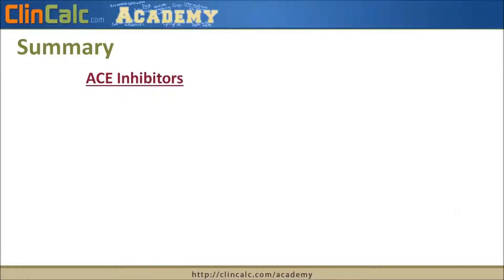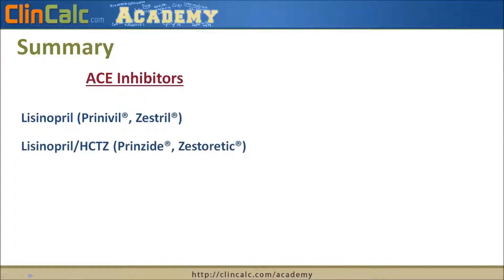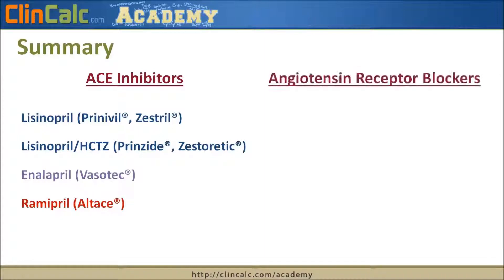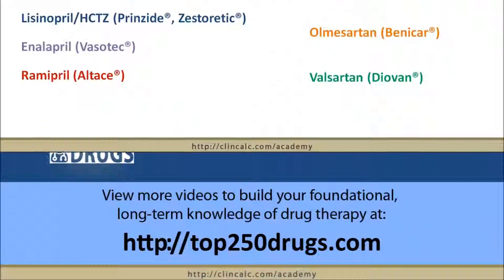To summarize: we discussed three ACE inhibitors — Lisinopril (Prinivil/Zestril), with a combination product with hydrochlorothiazide called Prinzide or Zestoretic; Enalapril (Vasotec), similar to lisinopril; and Ramipril (Altace), our alternative ACE inhibitor. We also covered three angiotensin receptor blockers: Losartan (Cozaar), Olmesartan (Benicar), and Valsartan (Diovan).